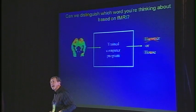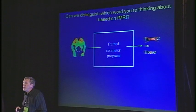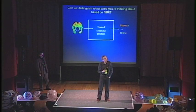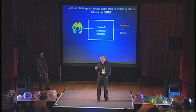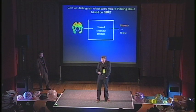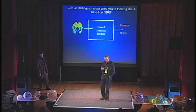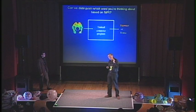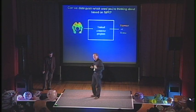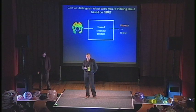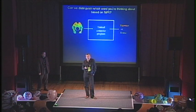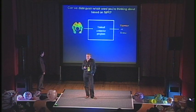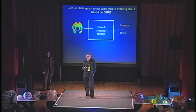We tried that, and in fact it works. If we do this on you and I get to pick the words, our program will probably get about 90% accuracy deciding whether you're thinking about the word hammer or house. So once we have this kind of technique down, we can go back to that question of whether it's the same pattern of neural activity in your brain and mine.